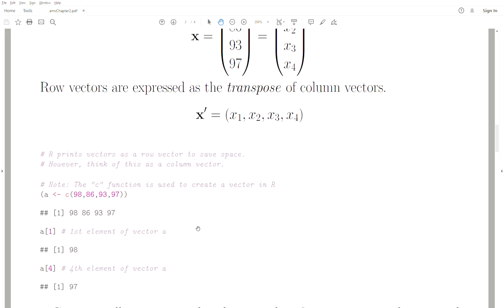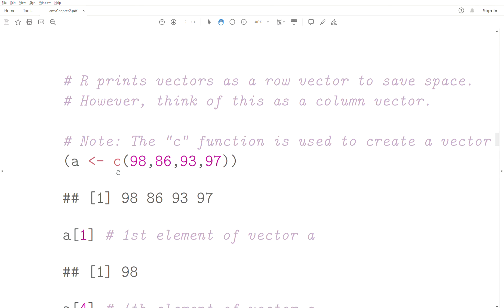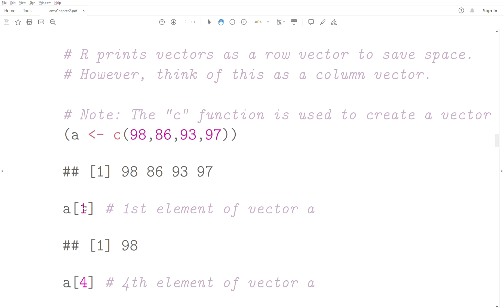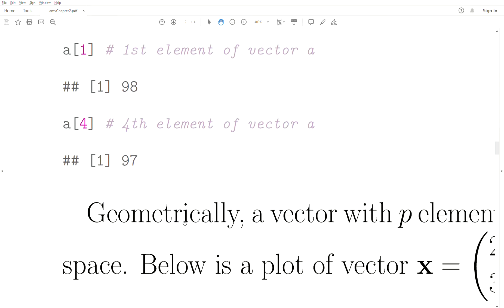Vectors in R: we use the C function to create a vector. So we want a vector of these numbers—a vector of size four—and we store it in 'a'. The left arrow assigns this vector to 'a', and then it prints. Since vectors are one dimensional, we only need one number in the square brackets to grab an element. The first element of vector 'a' is written like this. The fourth element of vector 'a' is this.